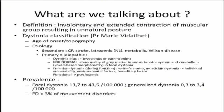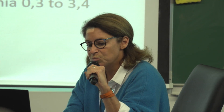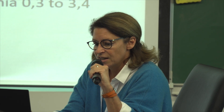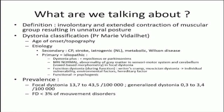We must distinguish functional dystonia from task-specific dystonia. Task-specific dystonia appears during a function and disappears at rest, like writer's cramp and musician's dystonia. In these dystonias there is individual vulnerability, environmental factors, and probably hereditary factors. When we have eliminated all other reasons for dystonia, we talk of functional dystonia — previously called psychogenic dystonia. Prevalence is rare; focal dystonia is rare, and functional dystonia represents less than 3% of movement disorders.